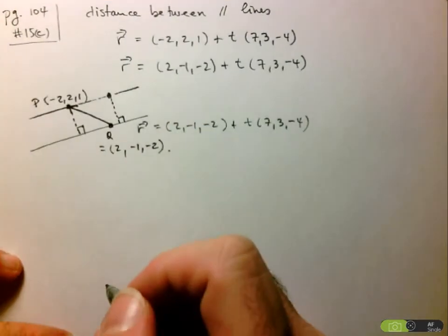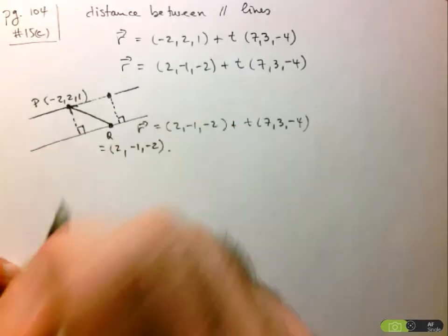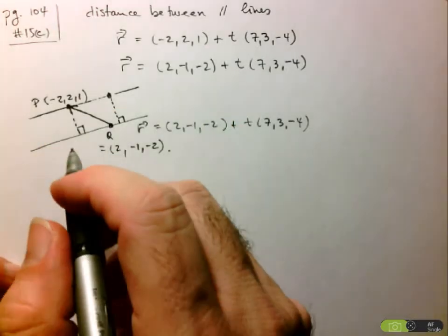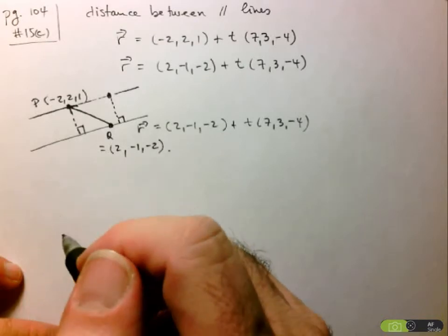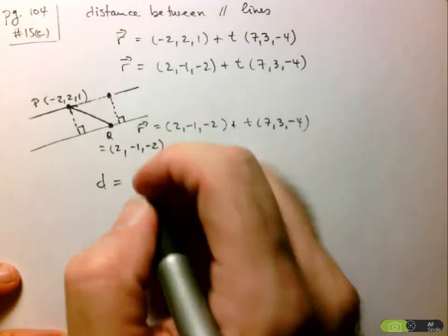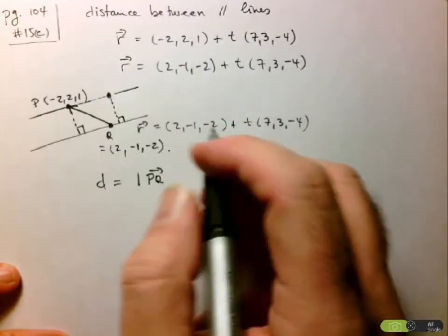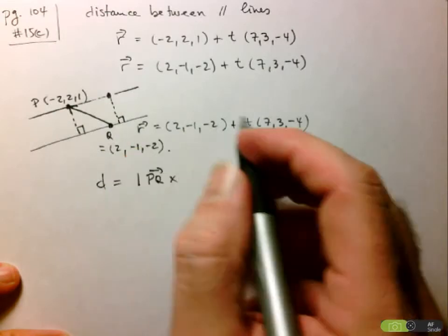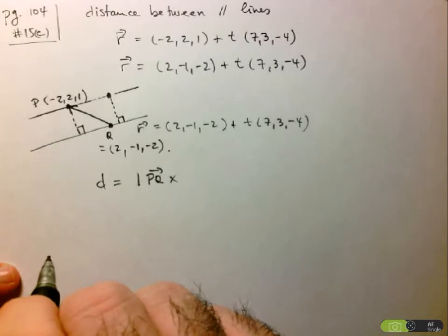And then we can use our formula. So the idea here, remember, is we created a right angle triangle and we use the fact that sine theta appears in the cross product formula to find this equation for the distance. I take the magnitude of the cross product between this vector PQ with the direction vector of the line I'm finding the distance to, in this case here.